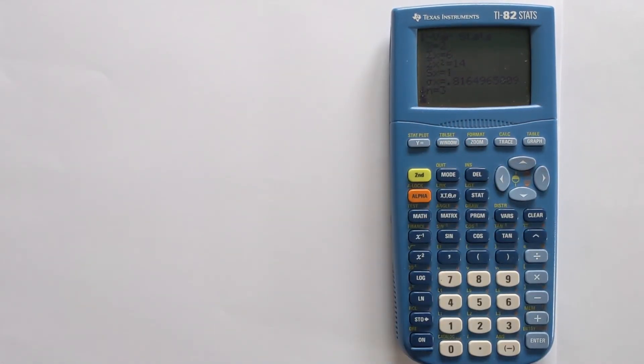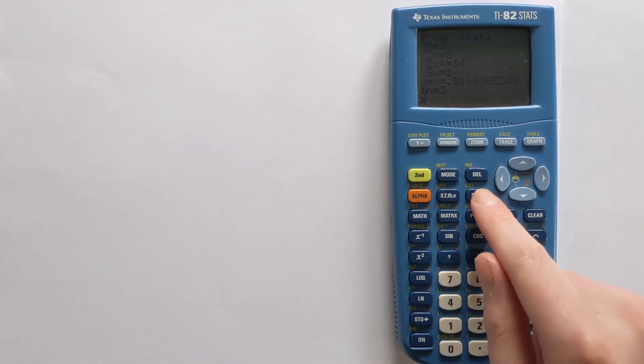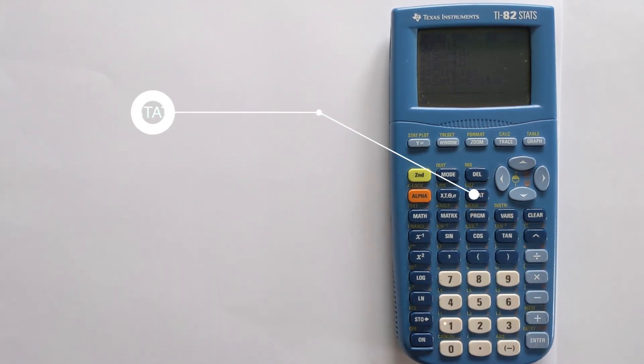That's how you do it normally without a frequency column. If you wanted to add a frequency column, it's a little bit more complicated. Let's go back into the editor—enter, so STAT and then 1, so we can go back.